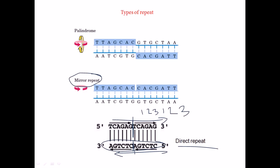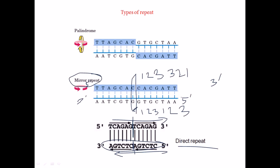A mirror repeat is where, if we consider an imaginary mirror placed at a particular plane, we find the sequence TTAGCAC on the left side of the mirror, and on the right we find CACGATT — the mirror image. The same complementary relationship is maintained on the opposite strand as well, with the 5' to 3' direction properly maintained. If we have sequence 1-2-3 before the mirror, we find 3-2-1 after it.